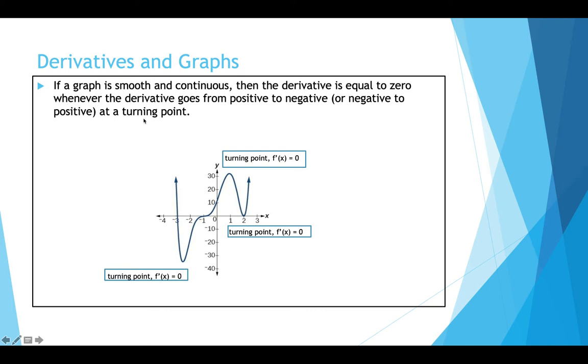If a graph is smooth and continuous, then the derivative is equal to 0 whenever the derivative goes from positive to negative or negative to positive at a turning point. You can see here we have a turning point, so the derivative is 0. Up here we have a turning point, and so the derivative is 0. And down here we have a turning point, so again the derivative is 0.